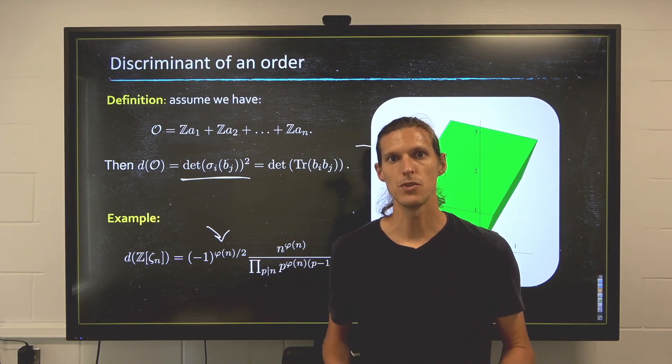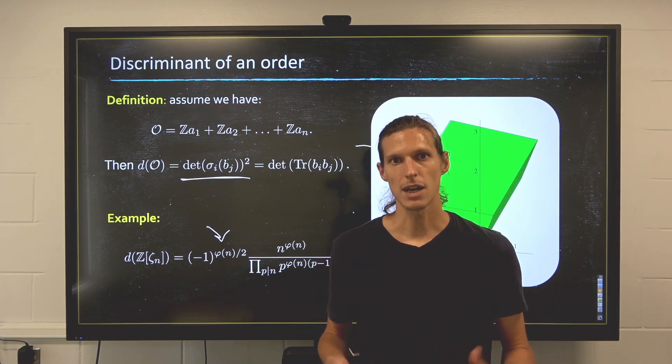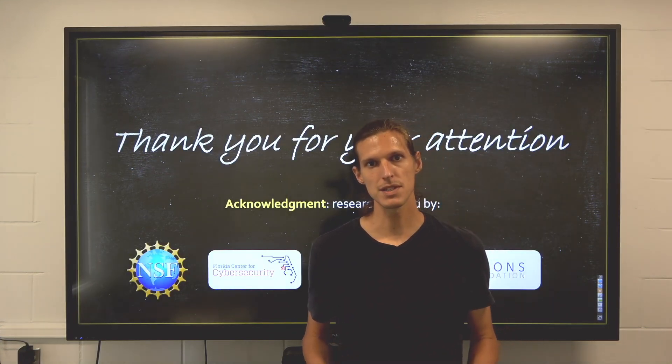So this is really how we're going to view the input size. That's why that notion of discriminant is so important in that context. So this is it. We've seen only a very brief introduction on number fields.